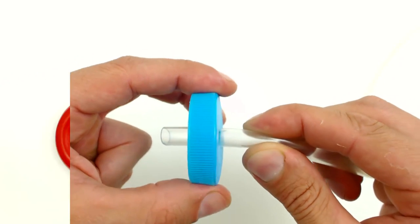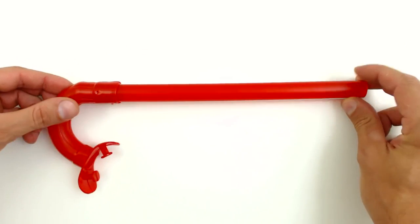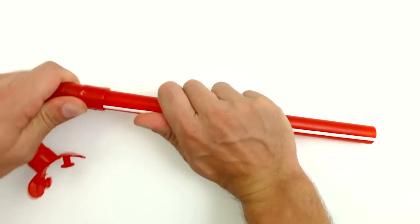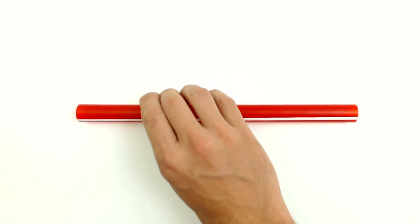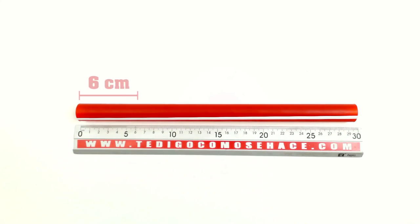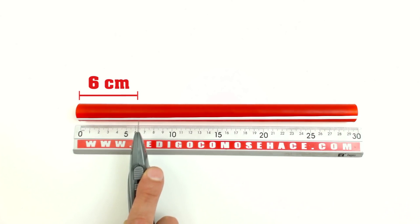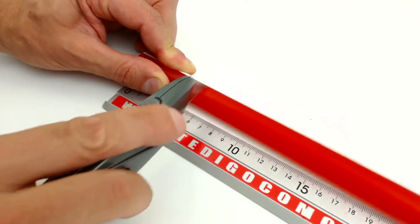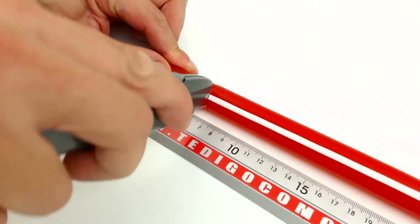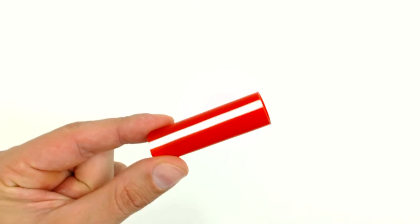Do the same procedure on the other cap. The next thing to do is to take the snorkel apart. For now we are going to use the tube. Measure 6cm from one of the sides and cut it with the cutter.